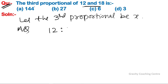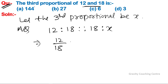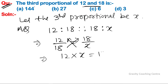According to the question, 12 ratio 18 is as 18 ratio x, which implies 12 upon 18 equal to 18 upon x. After cross multiplication, we get 12 into x equal to 18 into 18, therefore x equal to 18 into 18 upon 12.